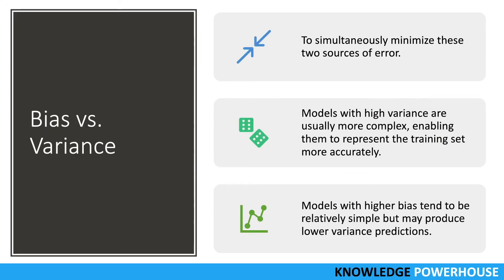The bias-variance dilemma is the conflict in trying to simultaneously minimize these two sources of error that prevent supervised learning algorithms from generalizing beyond their training set. This trade-off applies to all forms of supervised learning — classification, regression, and structured output learning. We generally want to choose a model that accurately captures regularities in the training data but also generalizes well to unseen data. The model tries to learn relationships from training data and then generalize to test data it has not seen.